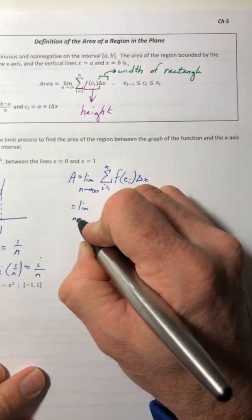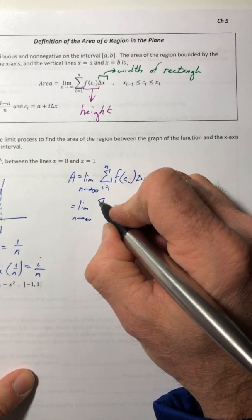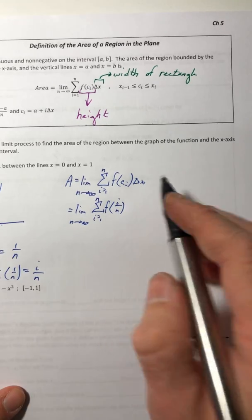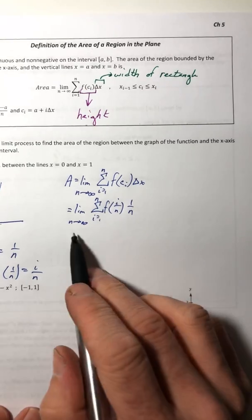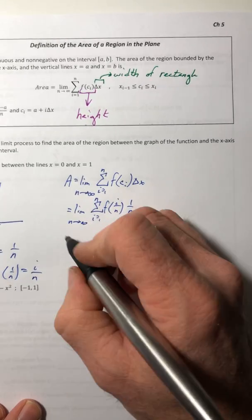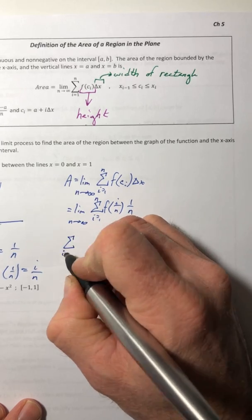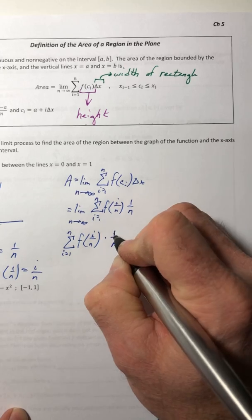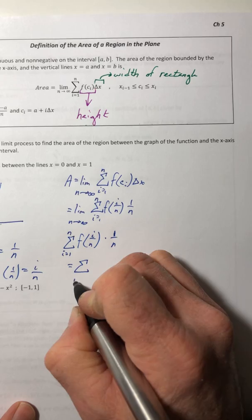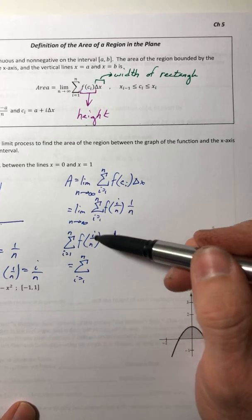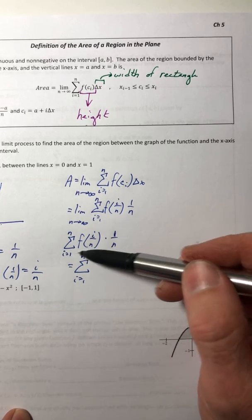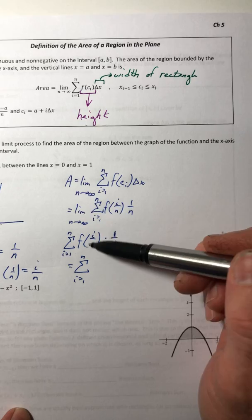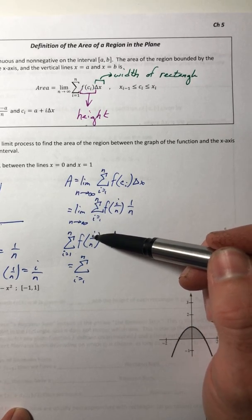Let's go ahead and plug in what we have. We're going to plug in the c sub i, so i over n, and then the delta x. I'll stick that in there too, and that's one over n. So let's do the sum first. This f of i sub n, you know it's the same thing as what we've always done. If you want to evaluate this thing, you take whatever's inside the parentheses and you plug it into the function. Whether it's a number, whether they're letters, you don't care. It's always the same thing.